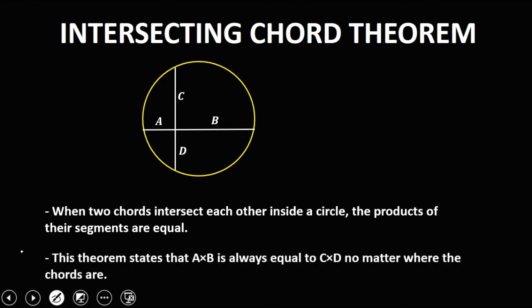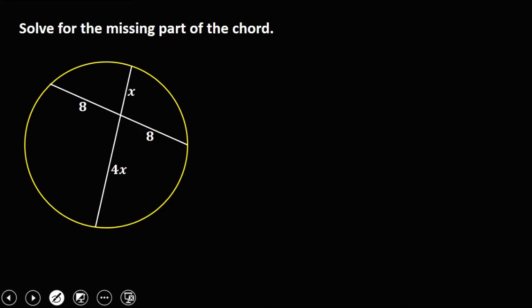So this theorem states that A times B is always equal to C times D, no matter where the chords are. So A times B is equal to C times D. Then we have this given,